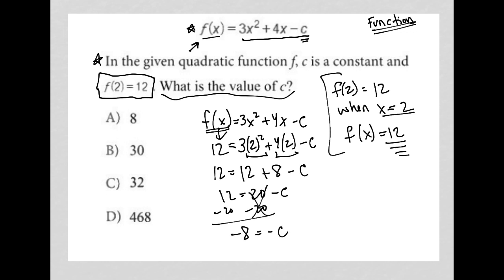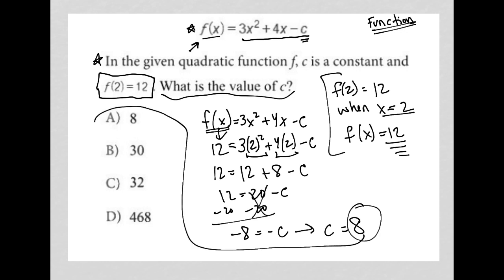I just multiply or divide both sides of that equal sign by negative 1. What I end up with is c equals positive 8. Therefore, answer choice A is correct.